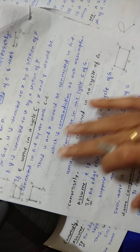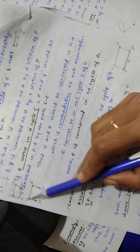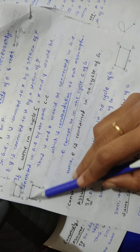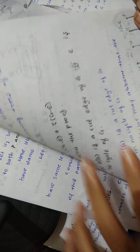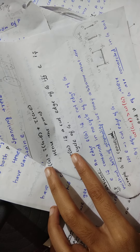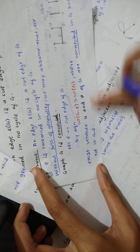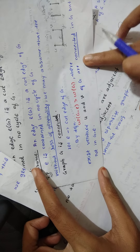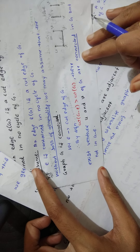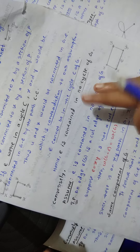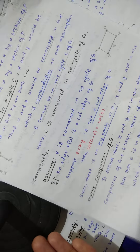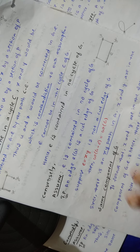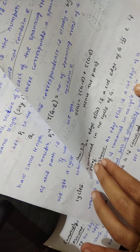Thus, if X and Y are connected in G minus E, then U and V would also be connected in G minus E — which is a contradiction to our assumption. Our assumption was U and V are connected in G but not in G minus E.